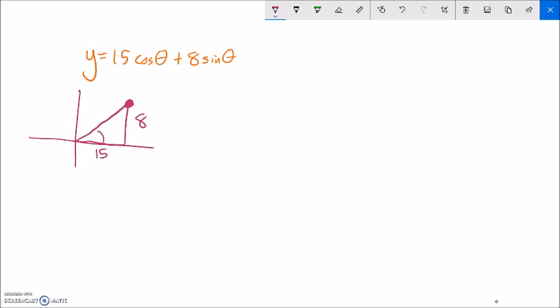So I have some angle in here. This angle is the shift in the linear transformation, and then this distance right here is A. So I can figure this out by first off doing some Pythagorean theorem. I know that 15 squared plus 8 squared equals A squared.